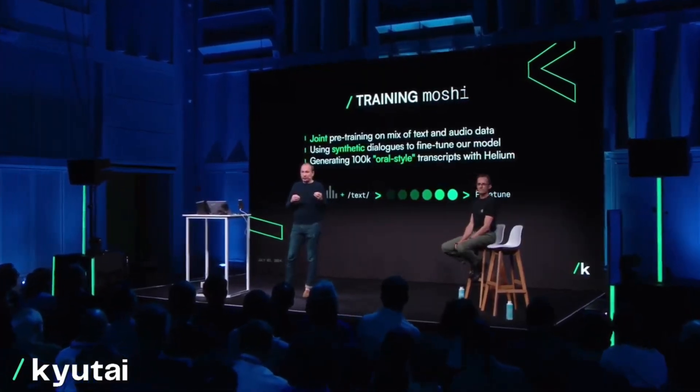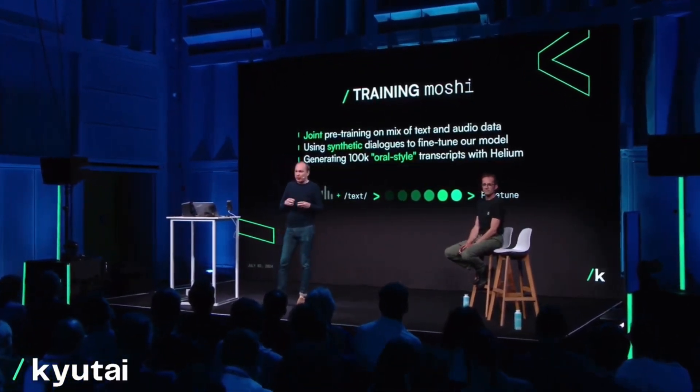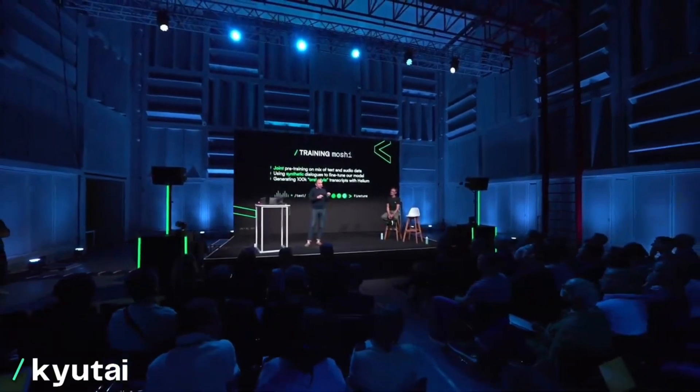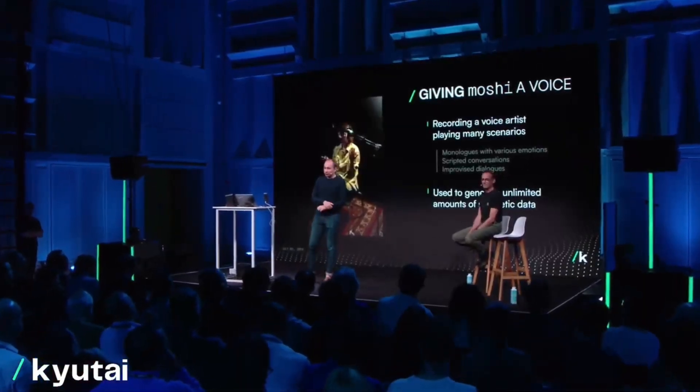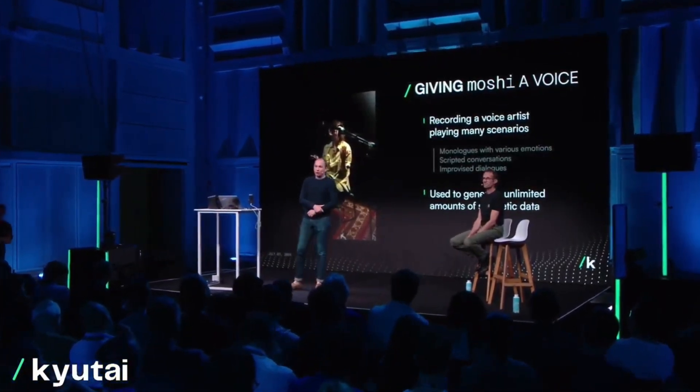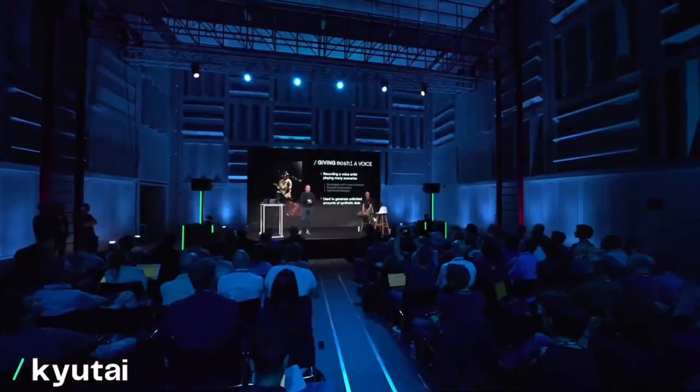We need to do what's called fine-tuning on conversation data. We decided to rely on synthetic dialogues to train the model. First, we started from the text-only language model and trained it to generate oral-style transcripts. Then, using those transcripts, we synthesized them with a text-to-speech engine that we also developed in-house. Finally, we can train Moshi on that data. There's one last ingredient: Moshi's voice. We wanted to give Moshi a consistent voice across interactions, so we worked with an amazing voice artist called Alice, who recorded many monologues and dialogues in different situations using different tones of voice and talking styles.